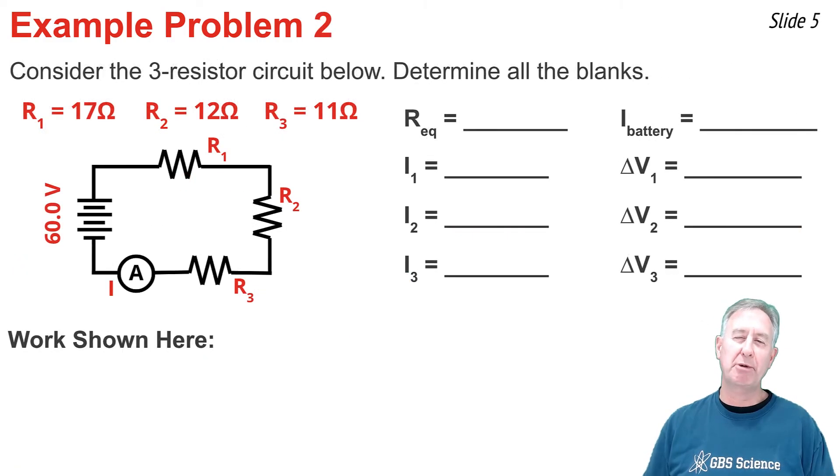In my second example problem, I'm going to analyze a three resistor series circuit. The resistance values are 17, 12, and 11, and the battery voltage is 60 volts. I want to determine all of the above. I'm going to do it in order, beginning with the equivalent resistance. That's simply the sum of all the individual resistance values. That's 17 plus 12 plus 11, and that comes to 40 ohms.